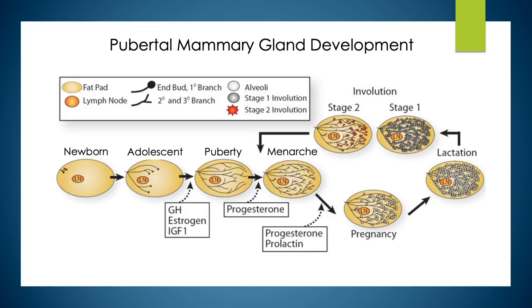The primary ductal structure is generated by terminal end bud bifurcation and is regulated by the surrounding stroma. Cap cells of the terminal end bud differentiate into myoepithelial cells, forming the outer layer of the lobular ductal bilayer that encircles inner luminal cells. Secondary branches sprout laterally from the primary ducts until a tree-like pattern of ducts occupies up to 60% of the available fatty stroma, leaving space for infilling under pregnancy hormones. In humans, the pubertal breast contains terminal ductal lobular units comprising numerous blind-ended ductules called acini, embedded in fibroblastic intralobular stroma, more pronounced than the adipocyte-rich stroma of the rodent mammary tree.